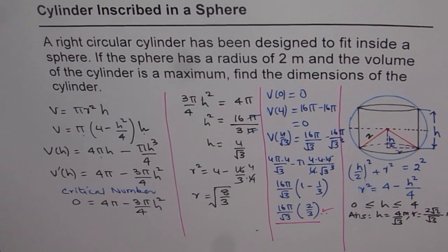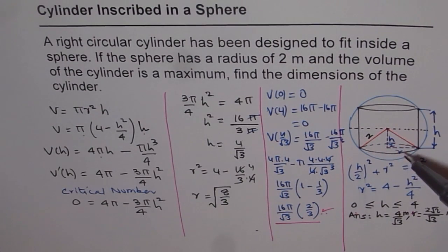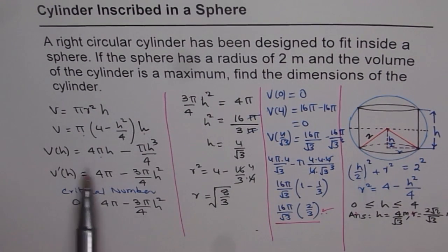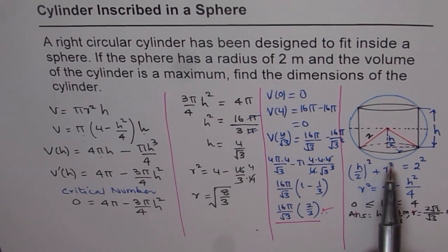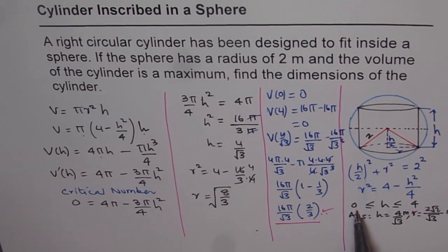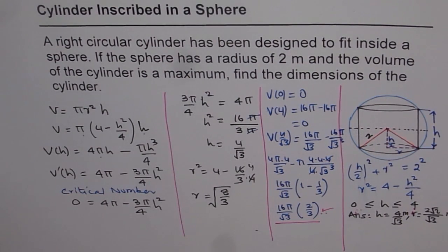The steps involved are: first, make a good diagram so you can relate the two variables — height and radius. The 2-meter radius of the sphere becomes the hypotenuse for the small triangle, where we take half the height and the radius, relating them with 2. That gives volume as a function of height in one variable. Find the critical number, then prove it is indeed a maximum by checking values at the critical number and at the boundary conditions — height could be 0 or 4. Check all these values and confirm it is a maximum.